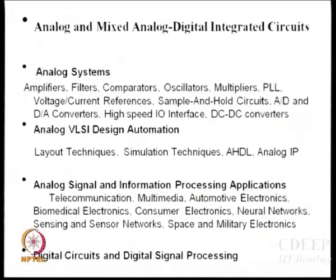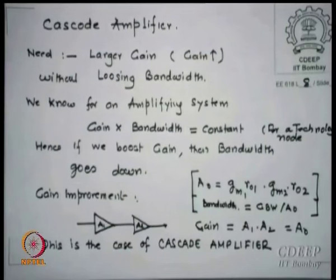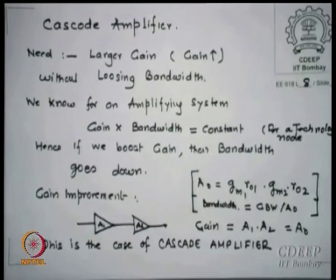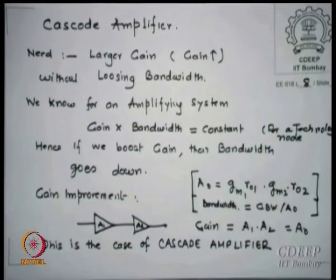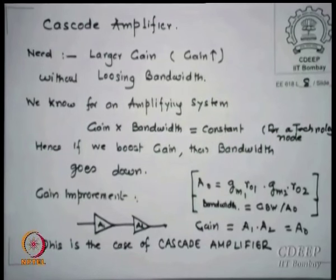We were looking last time at the cascode part. Cascode amplifiers have the advantage — recapitulating what we did last time — that you can increase the gain without loss of gain-bandwidth product. That is the strength of cascode over a cascaded system, and essentially this is what makes cascode very interesting.